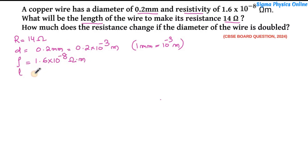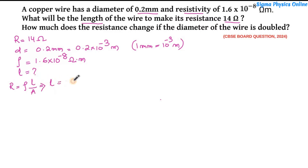We'll have to find out the length. We know the formula for resistance is R = ρL/A, which implies L = R·A/ρ. So we have the resistance and the resistivity. We'll have to find out the area first.